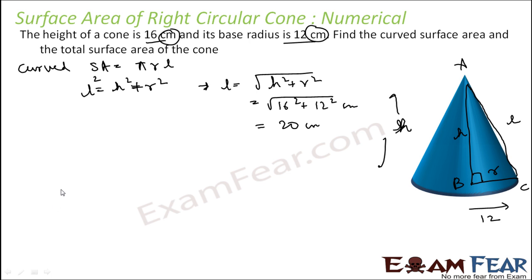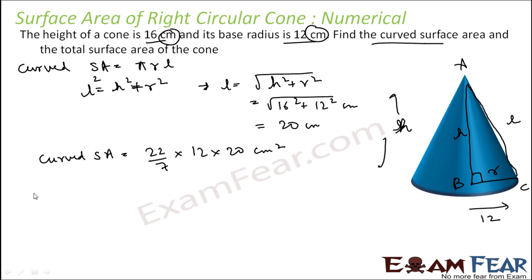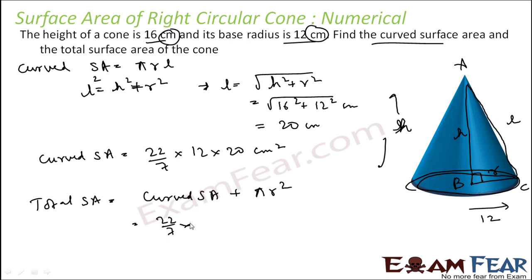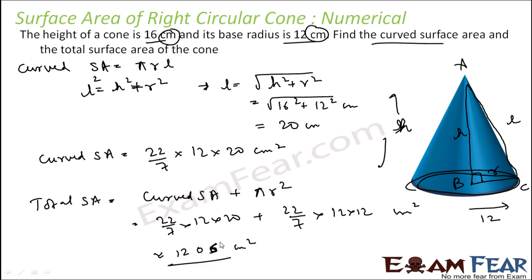Now that we have l = 20 cm, curved surface area equals πrl = 22/7 times 12 times 20 cm². For total surface area, add the area of the circular base: 22/7 × 12 × 20 plus 22/7 × 12 × 12, all in cm². You can calculate and add these values to get the final answer, which is approximately 1206 cm².